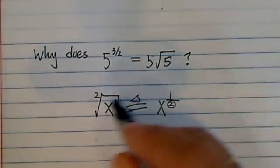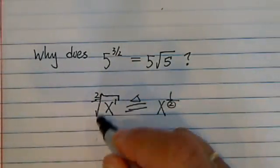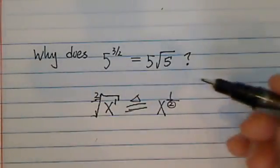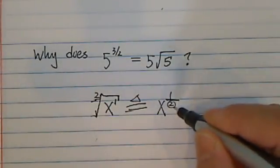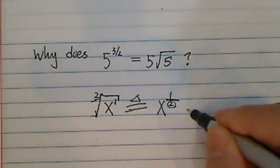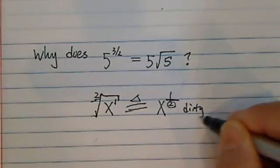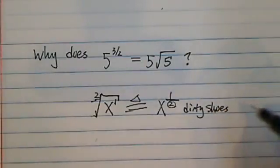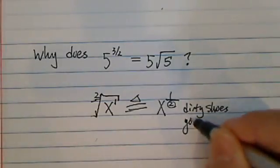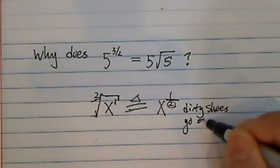So basically, whatever is on the bottom goes outside the house, if you think of this one as a house. So another way I was teaching my students is, think of this bottom number as a dirty shoe, or dirty pair of shoes. Shoes go outside. Dirty pair of shoes go outside.